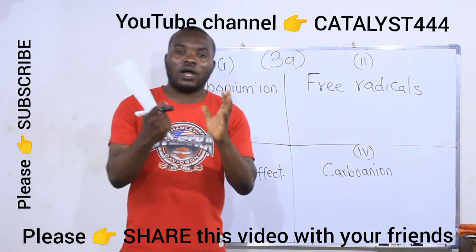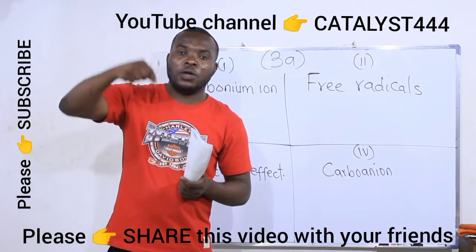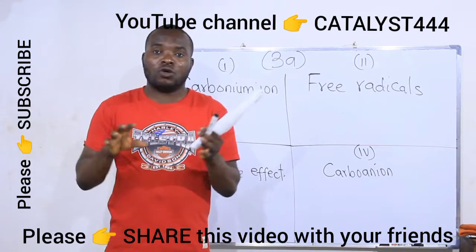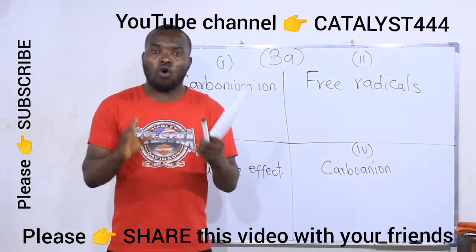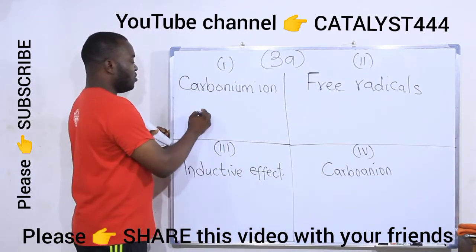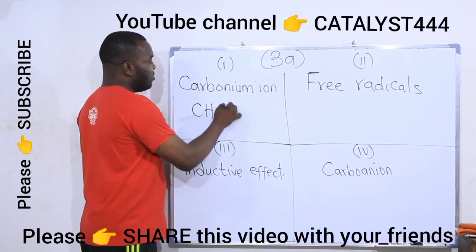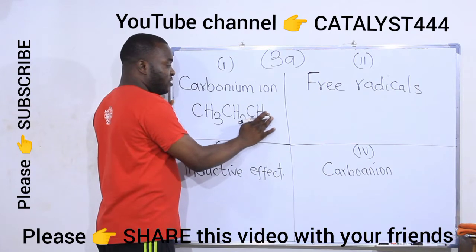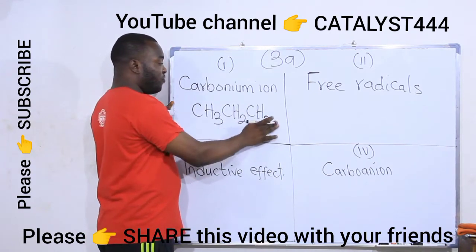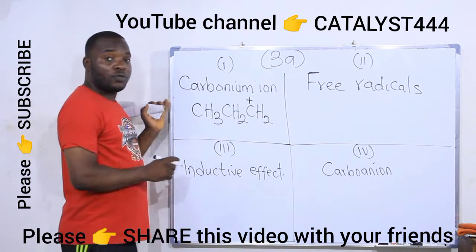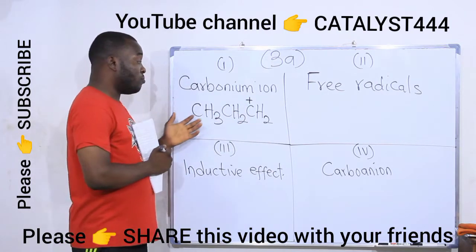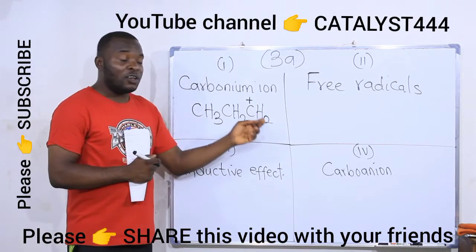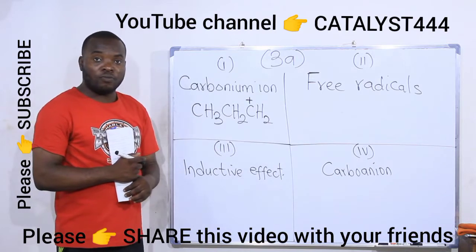A carbonium ion is an organic species that has a positively charged carbon atom. When there is a positive charge on a carbon atom in an organic compound, that substance is called a carbonium ion. For instance, a molecule like CH₃CH₂CH₃ — if this carbon loses one of its hydrogens, there will be a positive charge on that carbon atom, making the substance a carbonium ion.